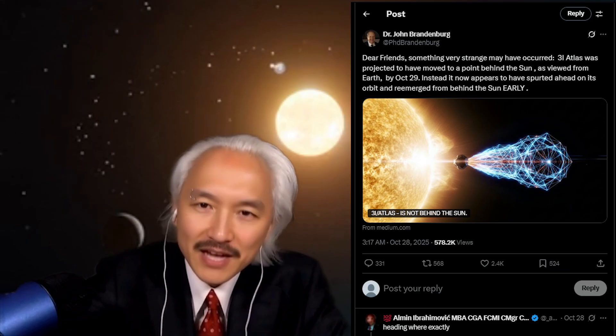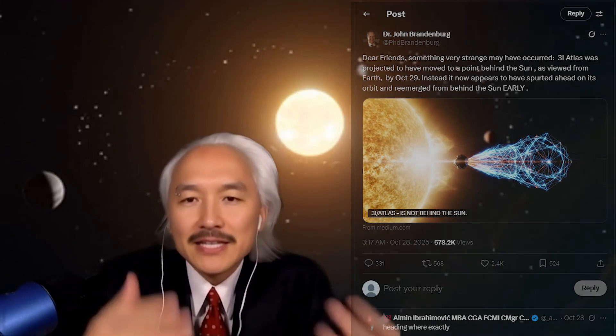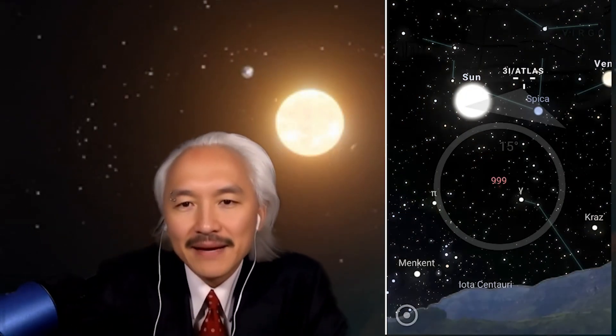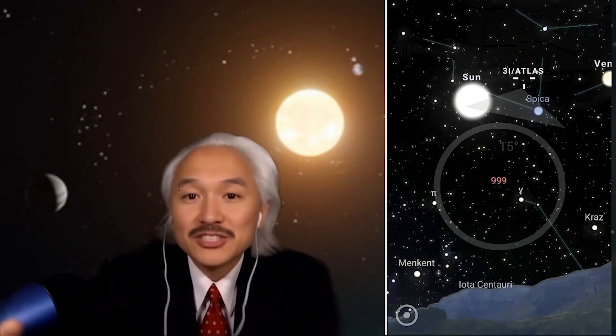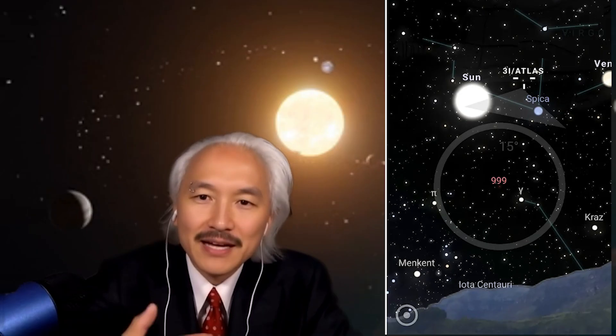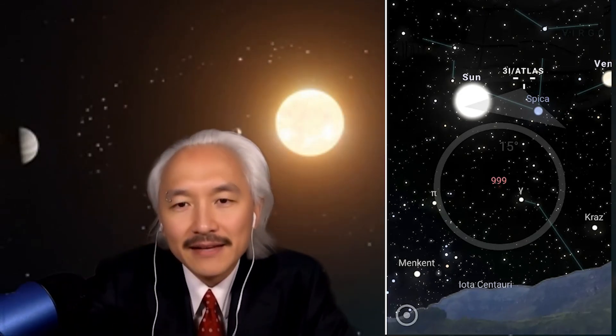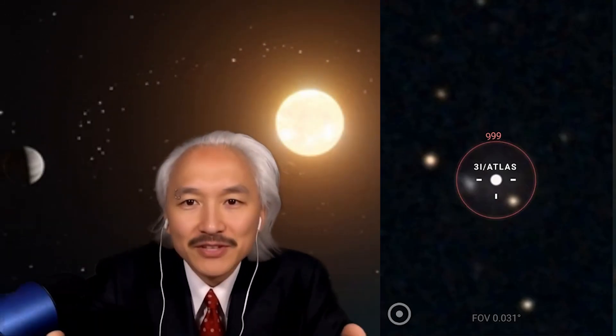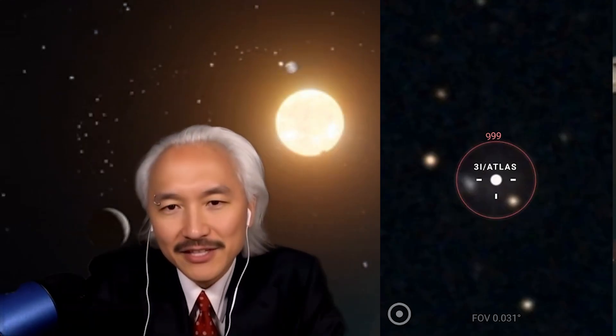This post came out saying that 3i Atlas reappeared from behind the sun ahead of schedule. This could indicate artificial movement. This statement is based on a text published on a blog. The text has several observation data. They say the astronomical community would have lied about the position of the interstellar object 3i Atlas. According to the author, while all websites and official agencies said the comet would be behind the sun, invisible during perihelion on October 29th, observations made on October 25th would show the object visible next to the sun in the constellation Virgo.